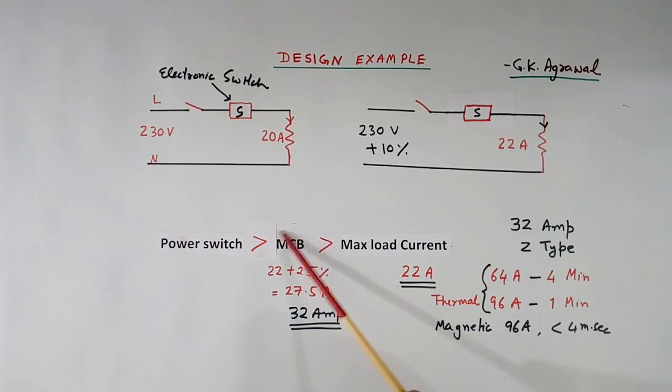So power switch should take more than 32 A continuously. Again for protection, this MCB will operate like this. If it's due to thermal protection, for 64 A current it will take 4 minutes. If it is Z-type, for 96 A it will trip in 1 minute. And magnetic protection will operate in less than 4 ms if current flows 96 A. So this switch should be rated sufficiently such that it can take continuously 32 A, more than that. According to me, if this is 32 A, it should be at least 40 A.